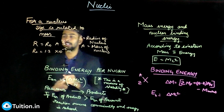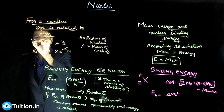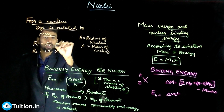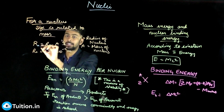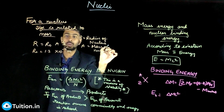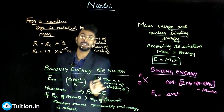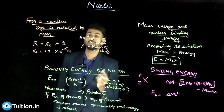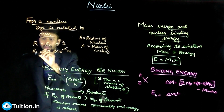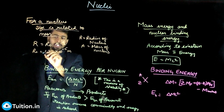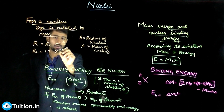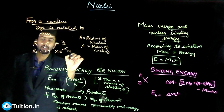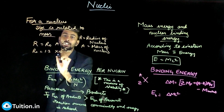This is given by the relation r = r₀ × A^(1/3), where r is the radius of the nucleus and A is the mass number of the nucleus. r₀ is a constant equal to 1.2 × 10⁻¹⁵ meters.